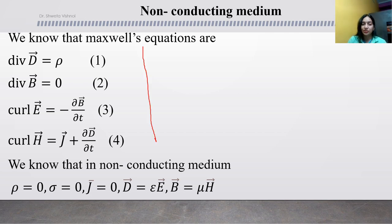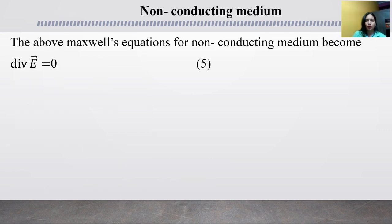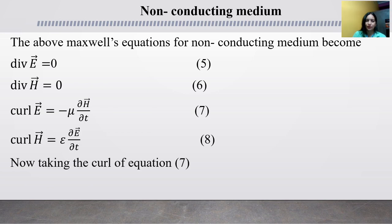Substituting these values into Maxwell's equations gives the modified non-conducting Maxwell equations: divergence E equal to zero, divergence H equal to zero, curl E equal to minus mu del H over del t, and curl H equal to epsilon del E over del t.